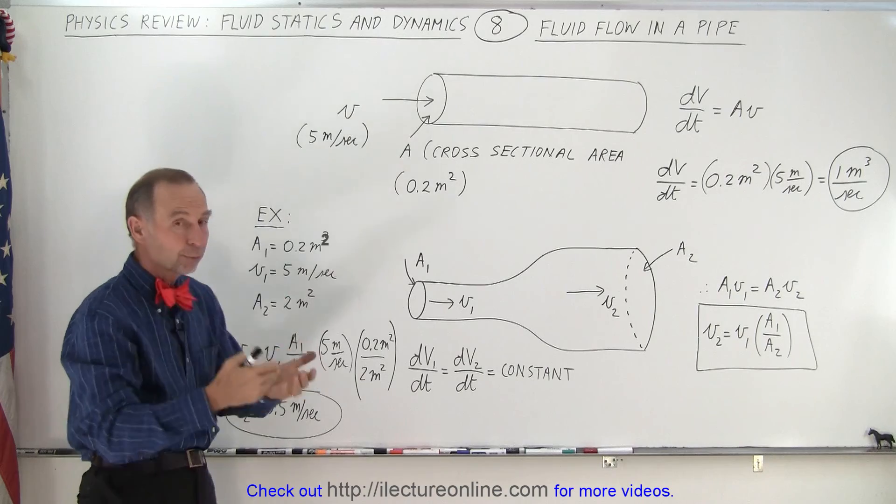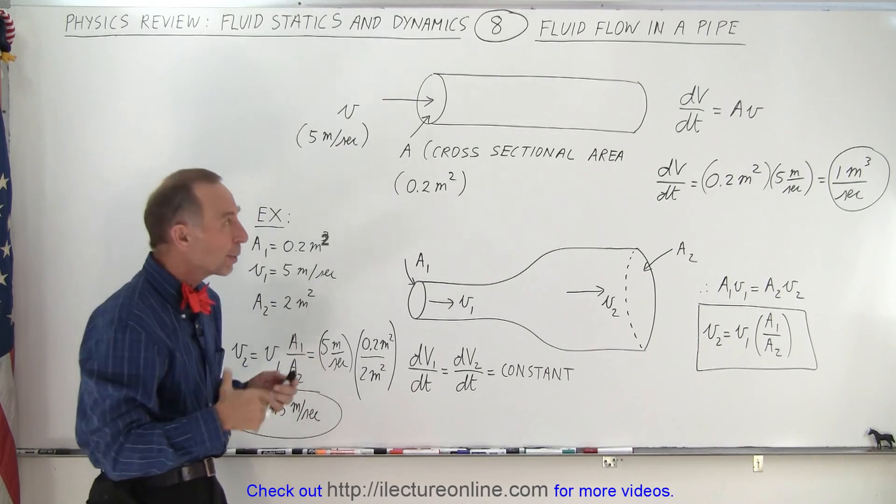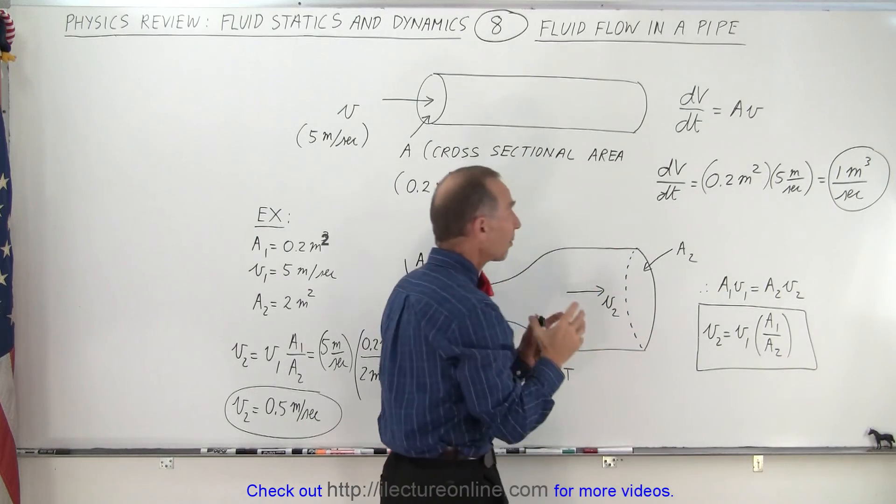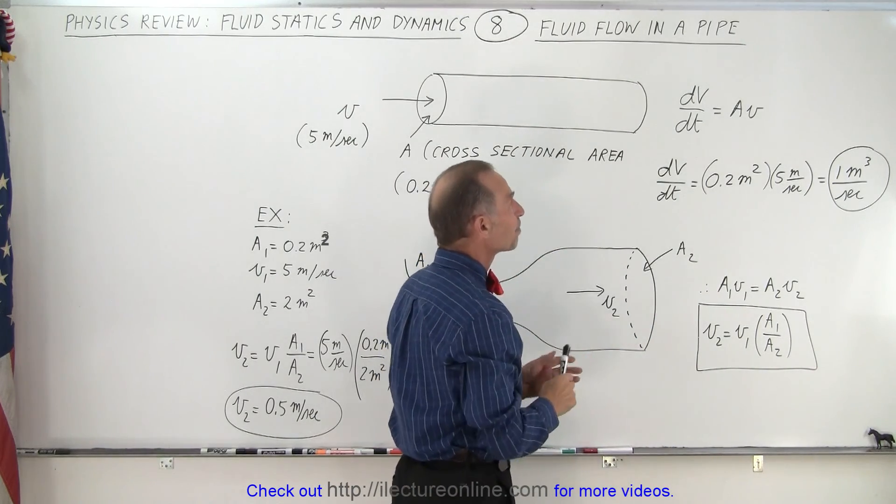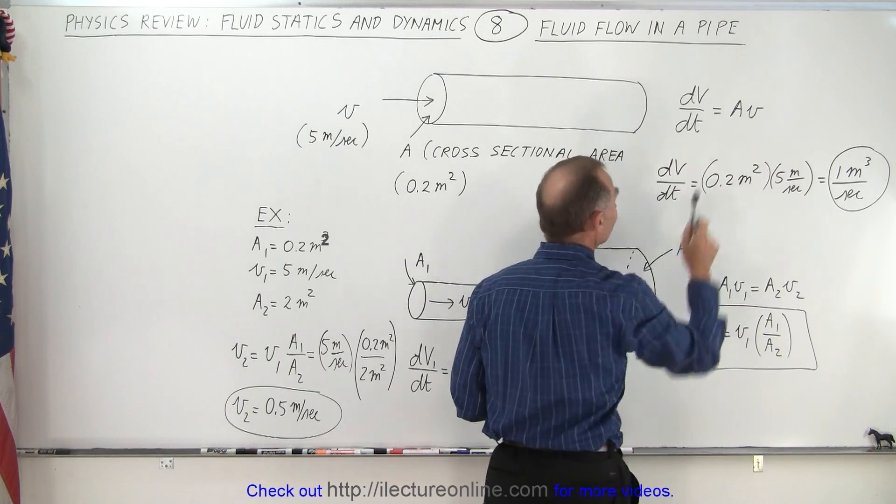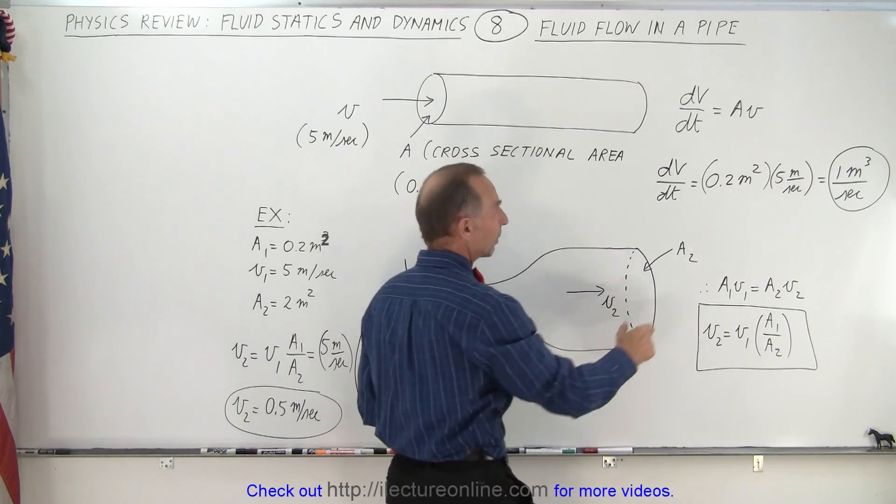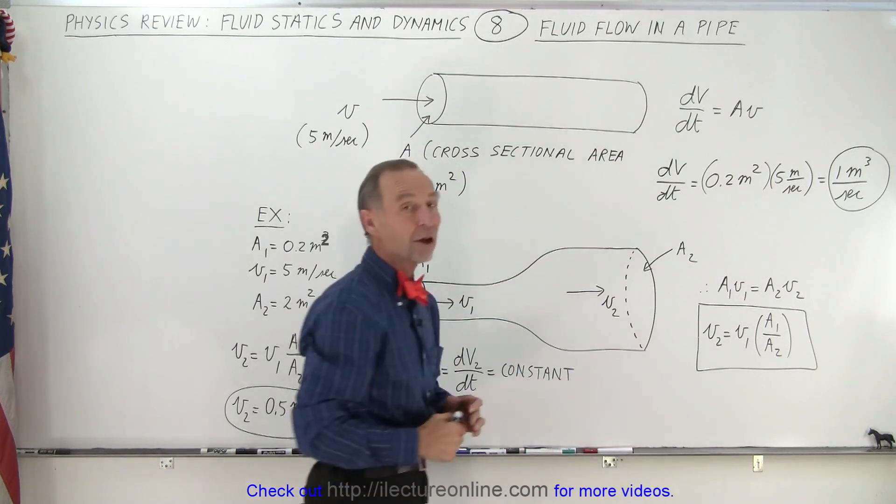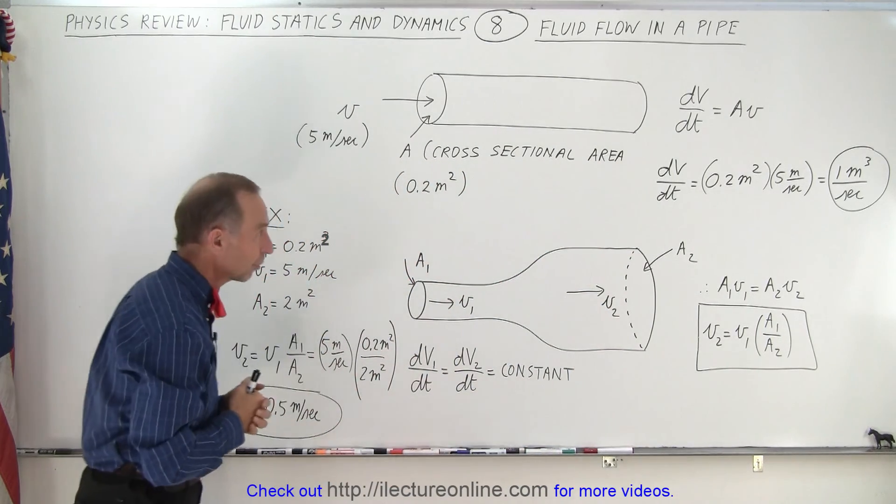What is the amount of fluid per unit time that flows through the pipe? We can represent that by dV/dt, where V is volume. So how much volume of fluid per unit time flows through the pipe? It is the area times the velocity. So we multiply the cross-sectional area times the velocity and we get the volume of fluid per unit time that flows through.